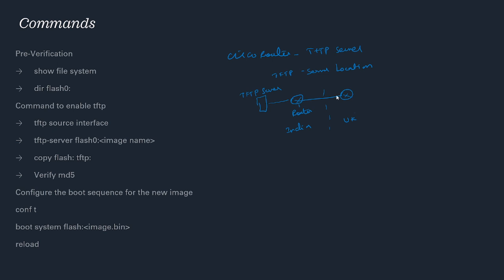There are pre-verification steps you need to follow. The first is the 'show file system' command, which shows what file systems are available on the router. You might see flash 0, flash 1, flash 2, slot 0, or slot 1, depending on the router. You should check what memory size is available before uploading the image, because without enough space you won't be able to succeed with the upgrade.